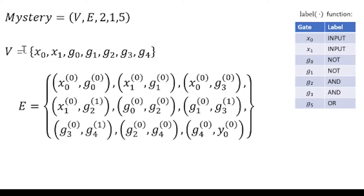We have given these gates names x0 and x1 for the two inputs, and then g0 through g4 for the five gates. We have a collection of nine edges, and then we have the labels for each of the gates. So we have two inputs, two NOTs, two ANDs, and one OR.